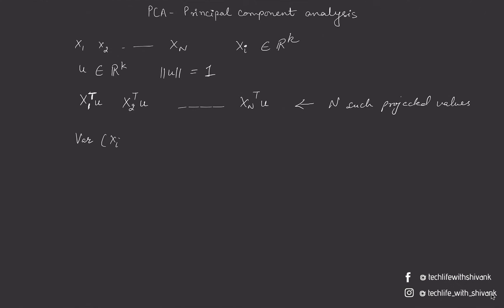So we have to find a direction u such that the variance of xi u for i equals 1 to n should be minimum, and variance is defined as (xi u minus expected value of xi u) squared, sigma i equals 1 to n, 1 by n.